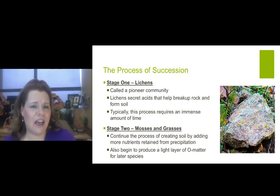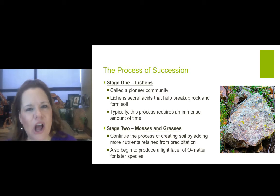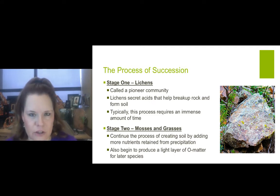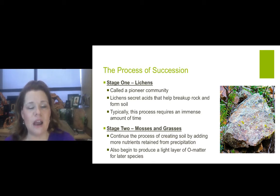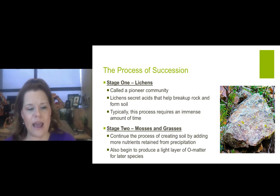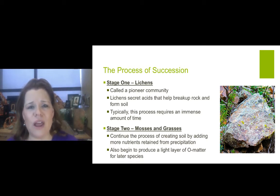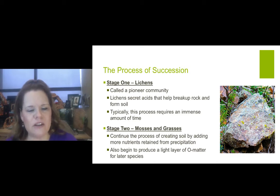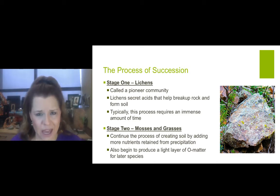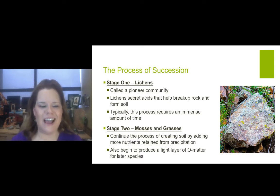The process of succession has several stages. Stage one is lichens — these are called pioneer communities. They secrete acids that help break up rock. They are enemies of rocks and they help form soil. This process requires an immense amount of time to break down hard bedrock with lichens or plants. Stage two is mosses and grasses. They continue the process of creating soil by adding more nutrients retained from precipitation. As rain falls, there are nutrients like carbon that can add into the soil. They also begin to produce a light layer of O-matter, which is your organically rich top layer of soil for later species.